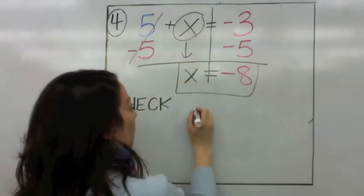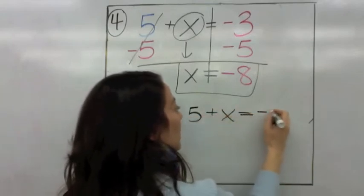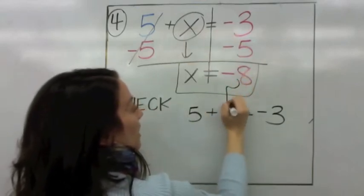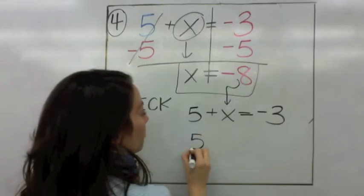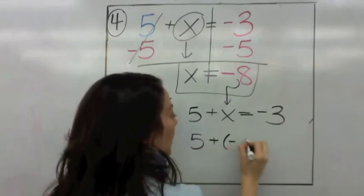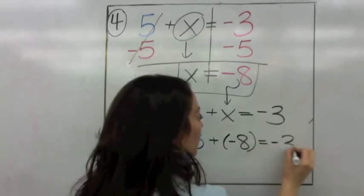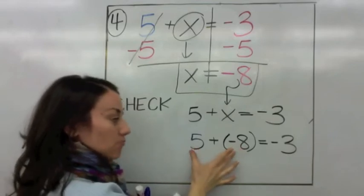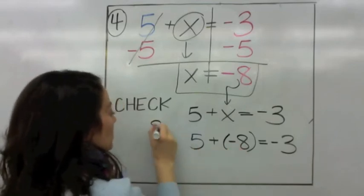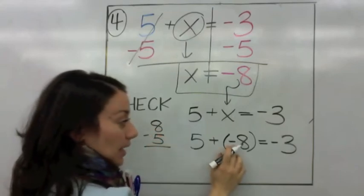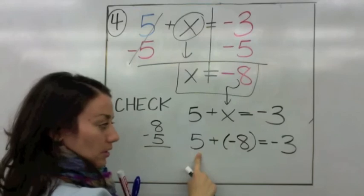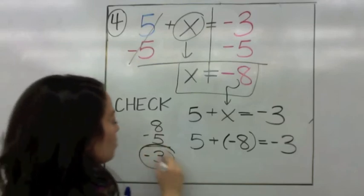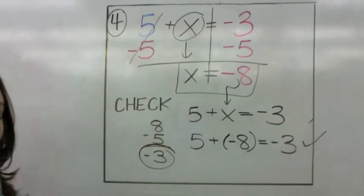Let's check our answer. We have 5 plus x equals negative 3 — that's the original equation. So we're going to substitute negative 8 in the place of x: 5 plus negative 8 equals negative 3. We have a positive 5 and a negative 8 — different signs, so different signs subtract. Keep the sign of the higher number — 8 is negative. When you subtract 8 minus 5, you do find negative 3. Very good.